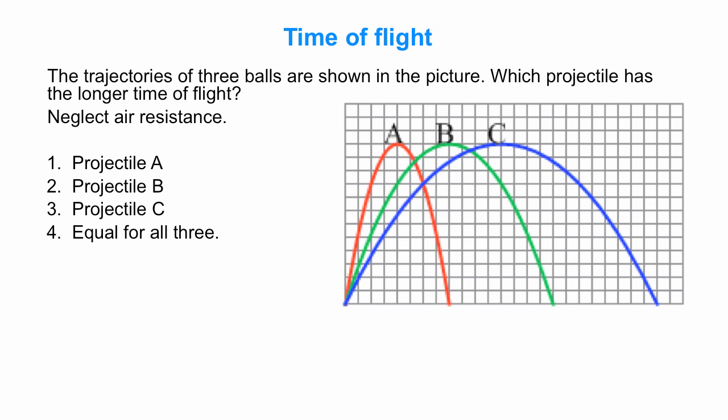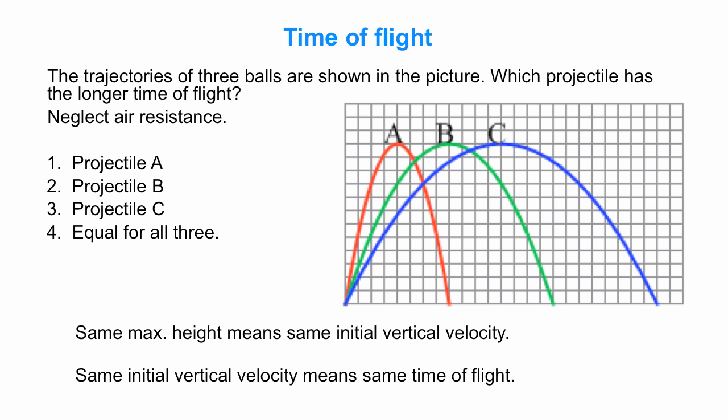What do we learn now? If we go back to this picture with the three trajectories, we can say they reach the same maximum height. What does that imply? Well, they have the same acceleration due to gravity. So if they reach the same maximum height, they must have the same initial vertical velocity. But the same initial vertical velocity means the same time of flight. So it's equal for all three of them. It doesn't matter how far they go horizontally. What matters is they all go the same height vertically. That all takes the same time.